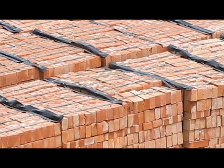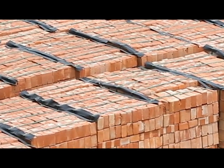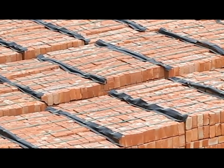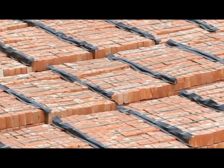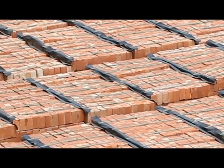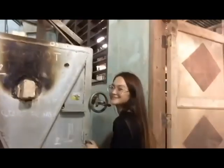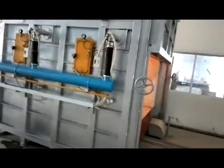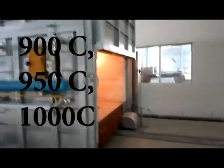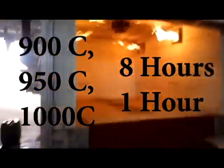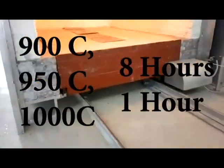The clay brick specimens were air-dried at room temperature, which is 25 to 30 degrees Celsius for 24 hours, and then oven-dried at 110 plus or minus 5 degrees Celsius for another 24 hours to remove water content. The green specimens were fired at 3 temperatures: 900 degrees Celsius, 950 degrees Celsius, and 1000 degrees Celsius. The time taken to reach the required temperature was 8 hours, and the specimens were kept at this temperature for 1 hour.